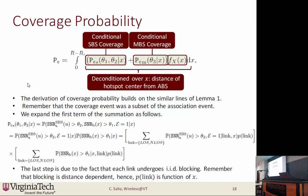Expanding the coverage probability, the small cell coverage term requires two conditions to be jointly satisfied: the backhaul link must be under coverage and the access link must satisfy the coverage condition. Since these two conditions are independent under our assumptions, we can split them into a product. Then, since each link can be either LOS or NLOS, these two terms are further split into the sum of LOS and NLOS probabilities, giving the final expression structure.